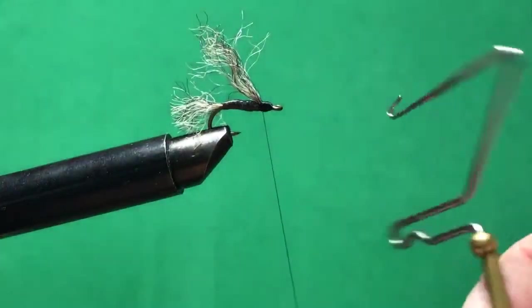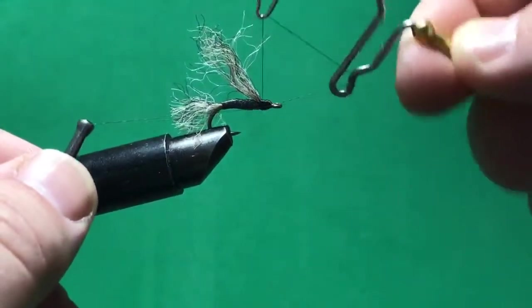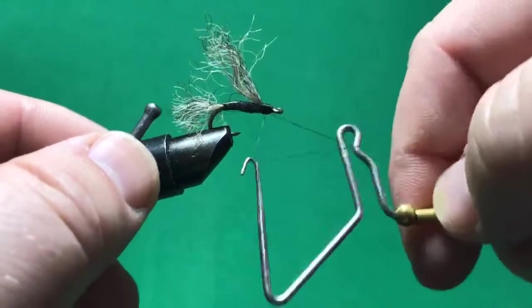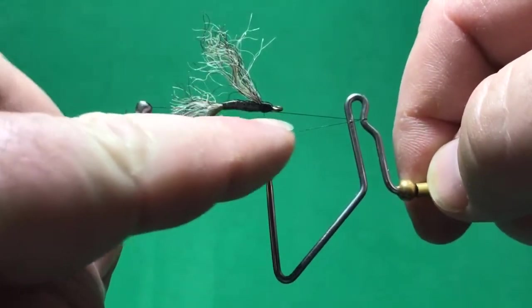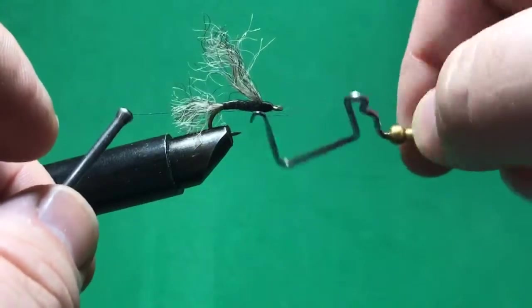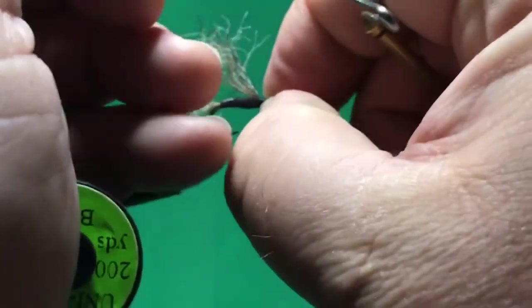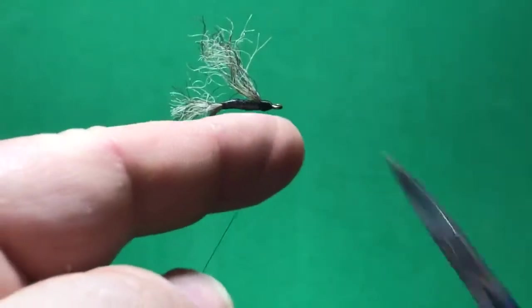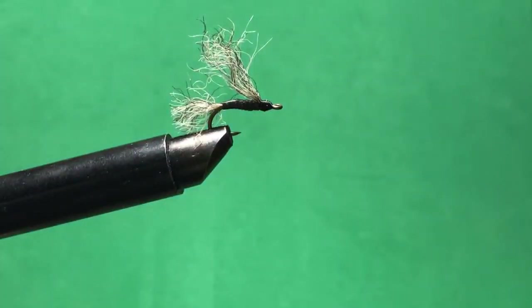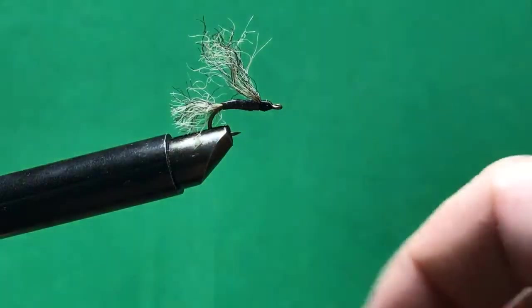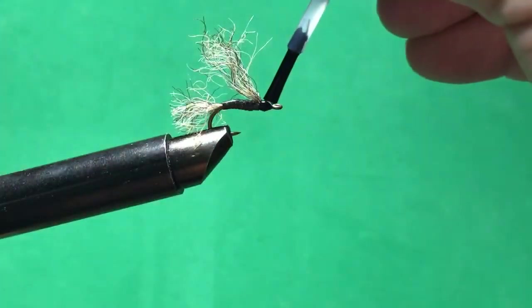Do a couple of twists. So this is just a finishing tool, this is a whip finisher. Basically what it does is it wraps that little bit of string around itself and then when you release it and tie it in, it locks all that thread down. And you just snip and then a little bit of nail polish to finish the head.